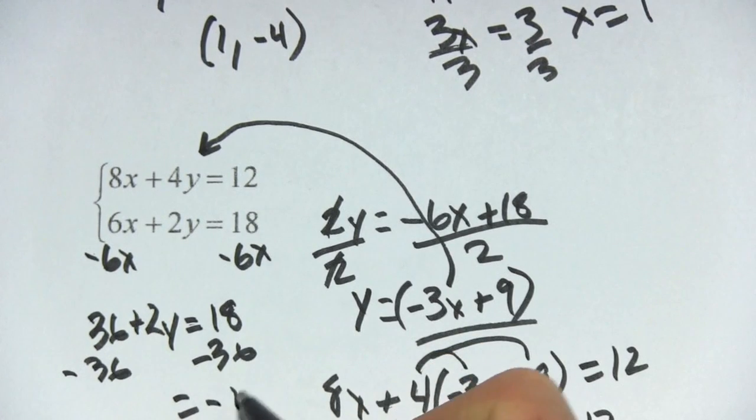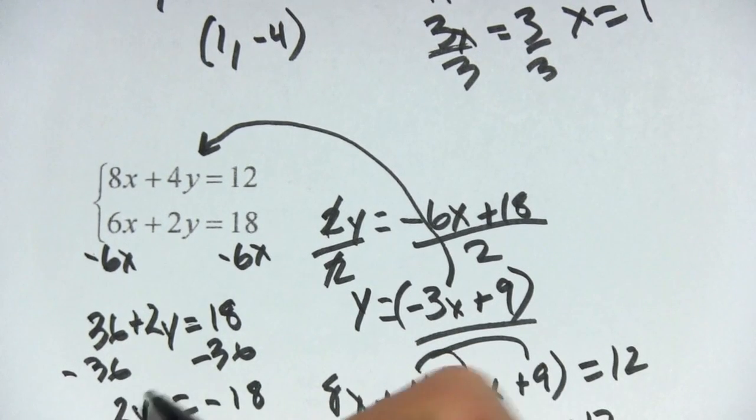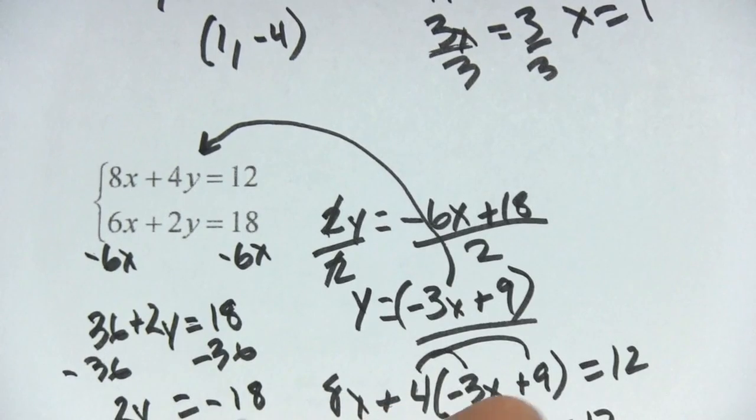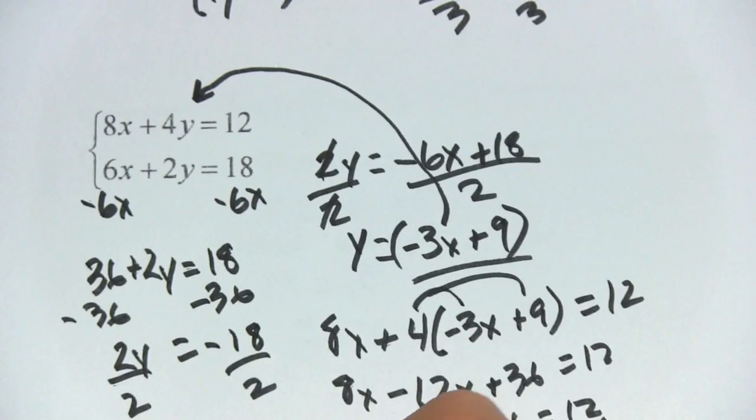If we subtract 36 from both sides, over here, we would get negative 18. Here 2y divide by 2, and we're going to get y equals negative 9.